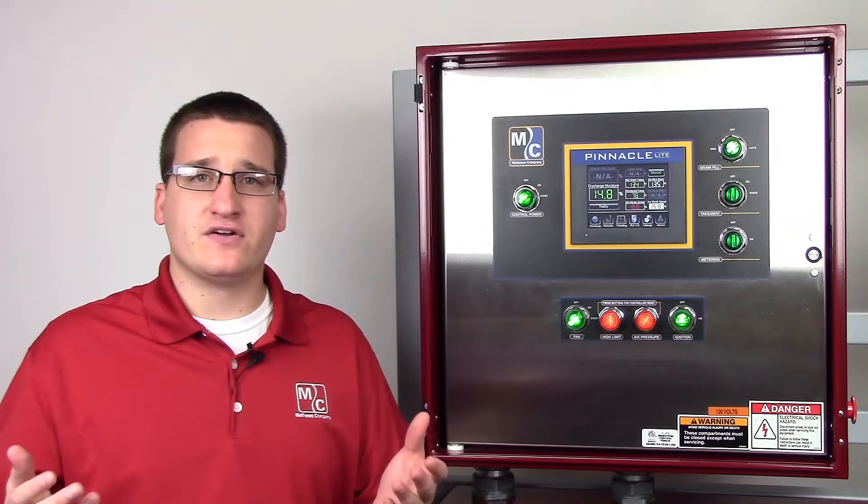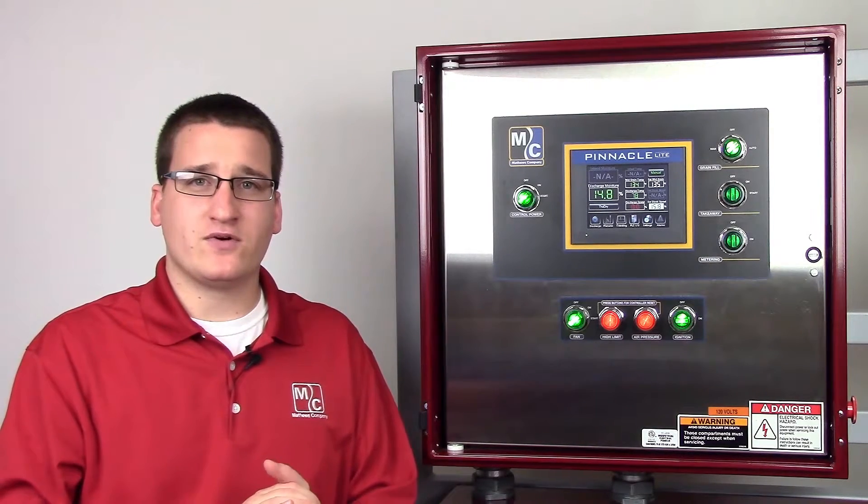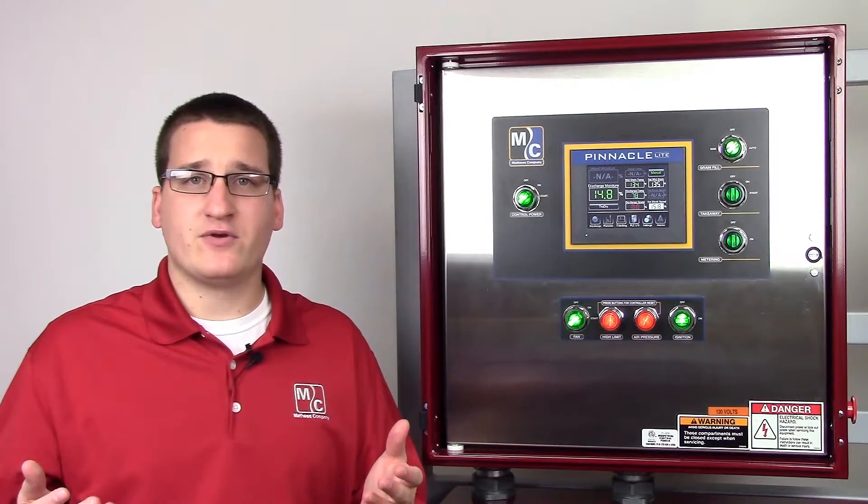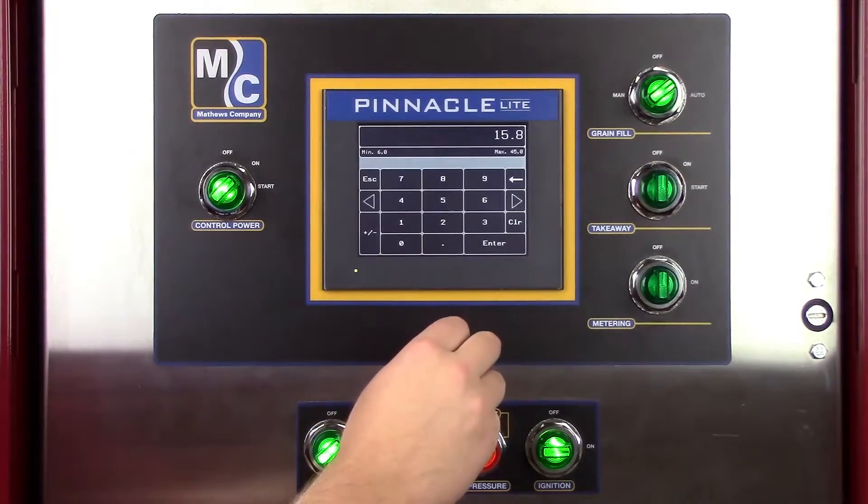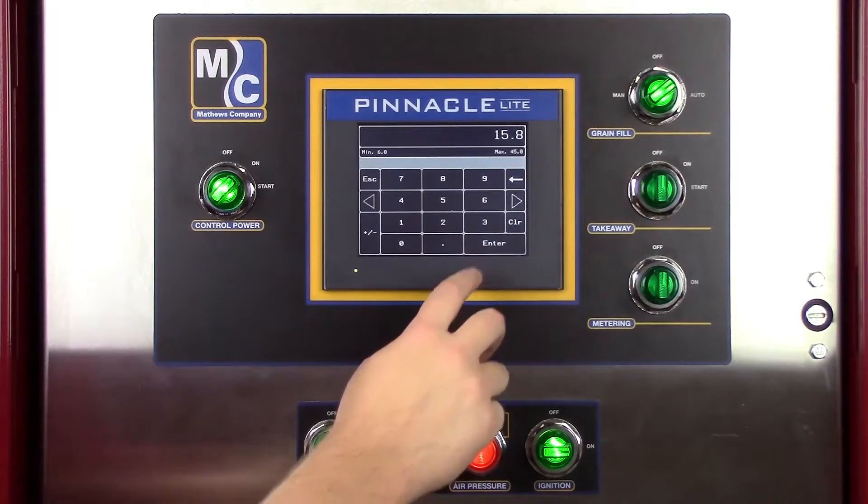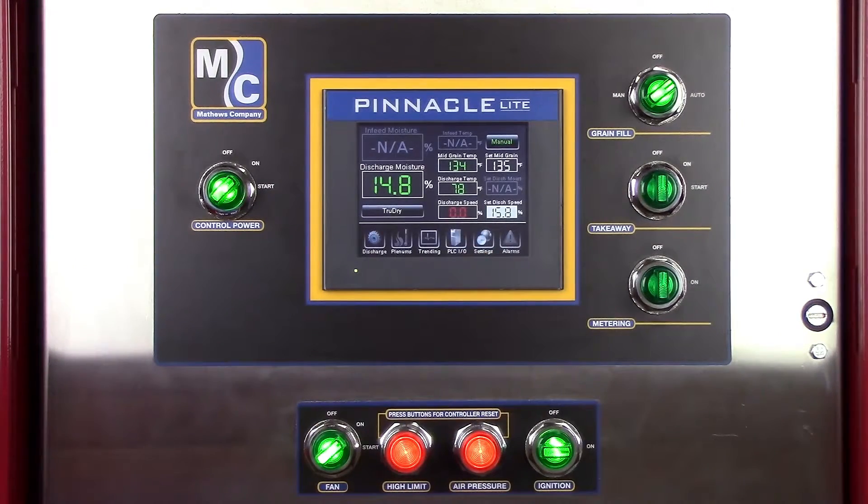You'll want to verify that your discharge mode is set to manual and you'll want to check that you're happy with your discharge speed set point. If you're unsure where to start this value, you can check your operations manual for a recommendation. Note that on this demo unit, our discharge speed is red because there's no discharge motor attached, but on your machine the discharge speed should be green.